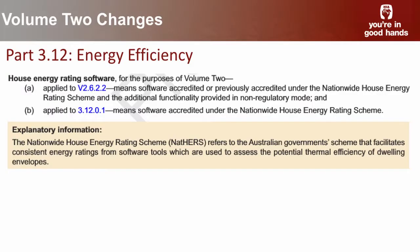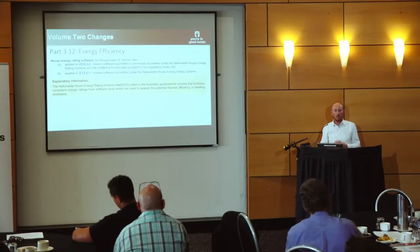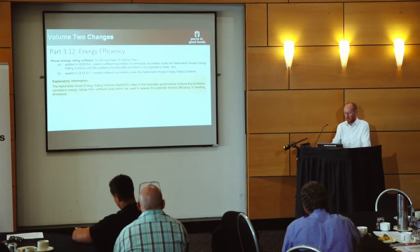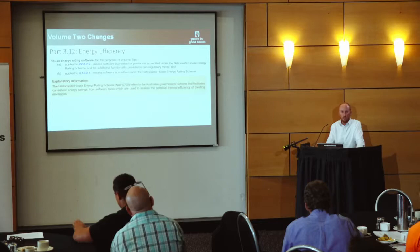Part of that has been another change to the reference building method: to clarify what type of software modelling tools you're allowed to use as part of using that method. And to clarify that the NatHERS tools — your BERS Pro, your Accurate, your FirstRate5 — aren't to be used as part of this method. Therefore, as part of your six-star standard requirements, if you wanted to use a tool, it would have to be a tool other than those NatHERS tools. There are other tools available in the market that could be used as part of that analysis, and that's what that definition change in the code has been.